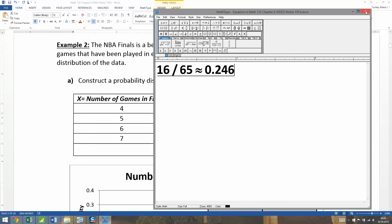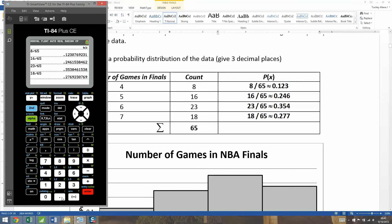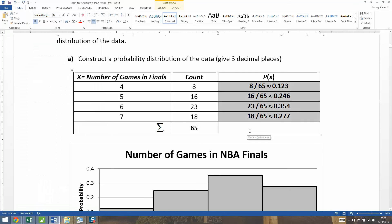Now if you did this correctly, these four numbers should add up to one. Let's see: 0.123 plus 0.246 plus... and sure enough, it makes one. If it had made 0.999 or 1.001, that would have been okay - that happens sometimes due to rounding error because you're rounding to three decimal places. But any more than that would be too much.